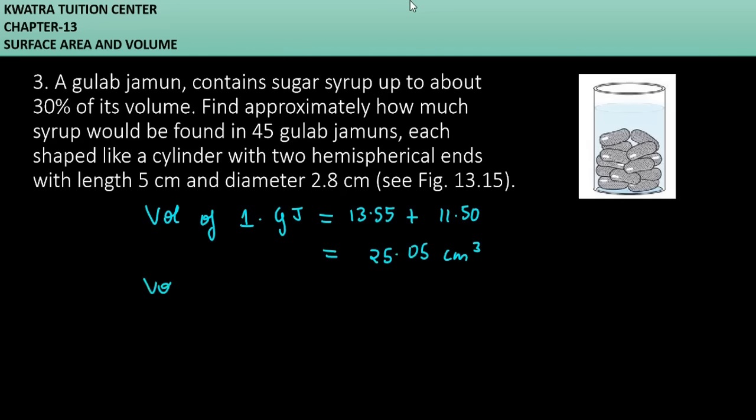तो अब हम क्या करेंगे? Volume of 45 निकालेंगे, और 45 के लिए 45 से multiply करोगे. अभी multiply मत करना. इसको हम बाद में देखते हैं क्योंकि हमें क्या करना? 30% ही है सिर्फ. Actual quantity जो है syrup की वो 30% है. 30% of its volume लिखा है. तो 30% को कैसे mention करते हैं? 30/100 and into जो भी volume है हमारी 45 gulab jamuns की, 45 × 25.05.